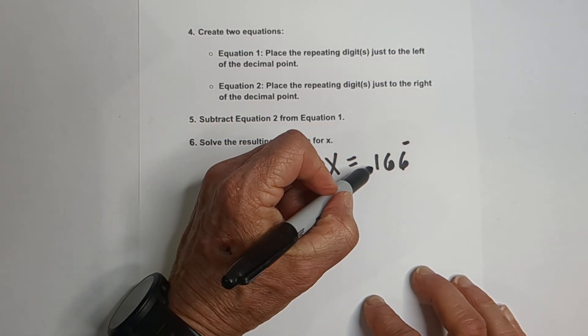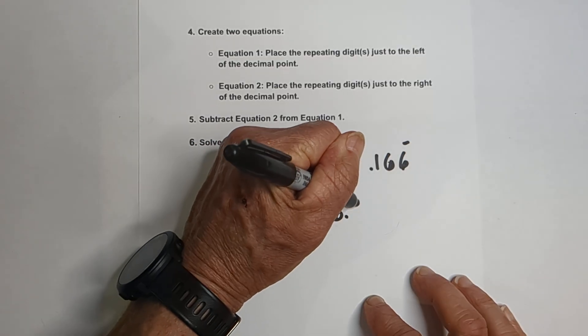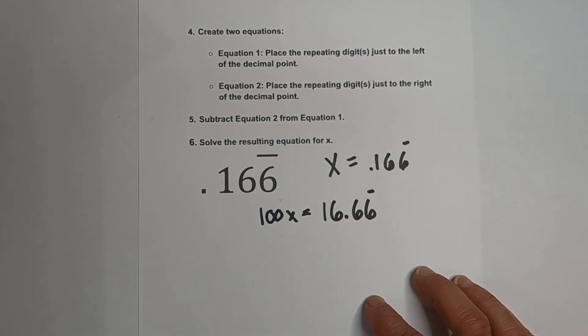So that's going to be 100x equals, and we're going to move the decimal two places, 1, 2, so that gives you 16 and 6, 6 repeating. So we have Equation 1.